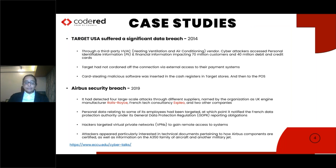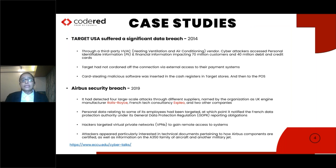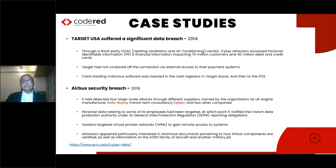Similarly, in 2019, Airbus was breached by hackers. This happened through different suppliers — Rolls-Royce, French tech consultancy Expleo, and two other companies. Hackers were particularly interested in their technological documents and engine know-how.